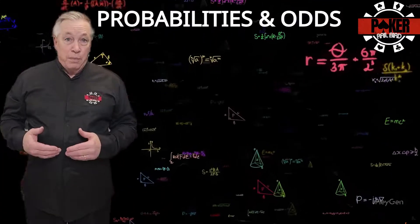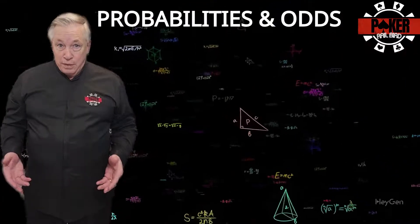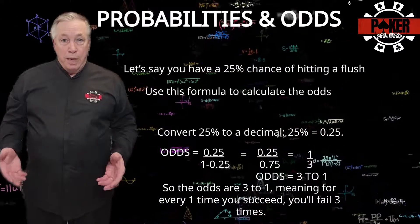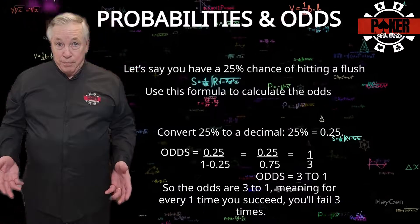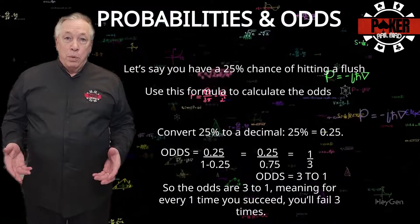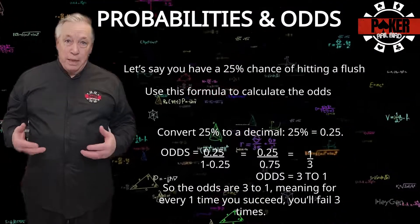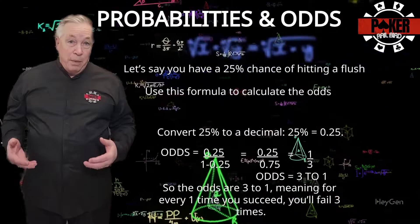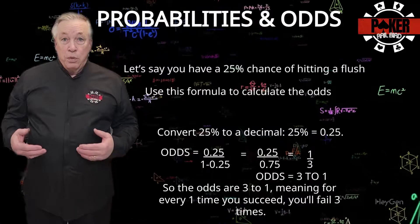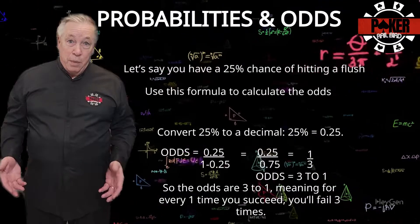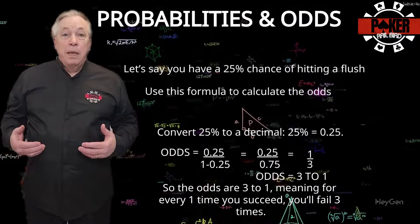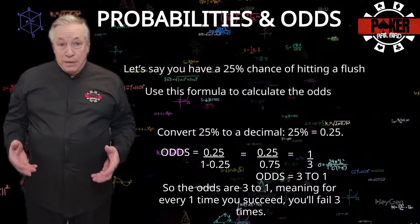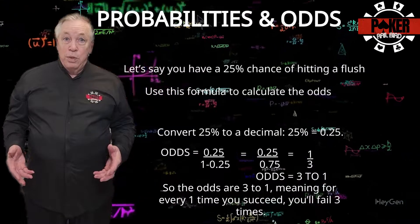Let's pick a quick example. To convert a probability to odds, you use the following formula: odds equal probability divided by 1 minus the probability. The numerator is simply the probability of the event happening, and the denominator is the probability of the event not happening. For example, if you have a 25% chance of hitting a hand, the probability of not hitting it is 75%. The formula would be 25% divided by 75%, or 3 to 1 odds.